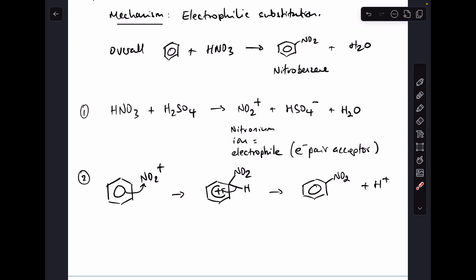Step two now: we take the nitronium ion electrophile. This is going to accept a pair of electrons from the benzene ring, and they come from the delocalized ring of pi electrons. So we show that by this curly arrow here. That generates this intermediate, which is unstable, and the way it stabilizes itself is by losing this H as a proton. How does it do that? A pair of electrons from the C-H bond go back into the ring and reform the delocalizing of pi electrons. So that's how the nitrobenzene forms and this H+ ion.